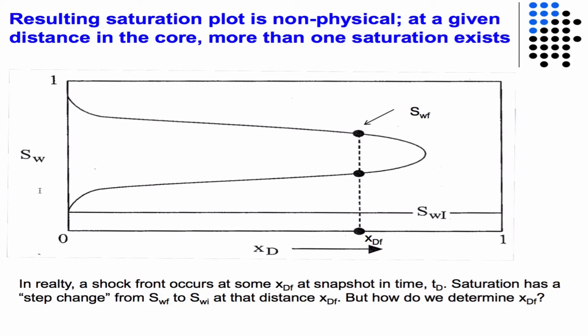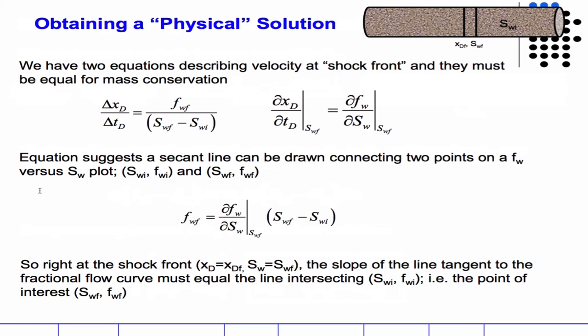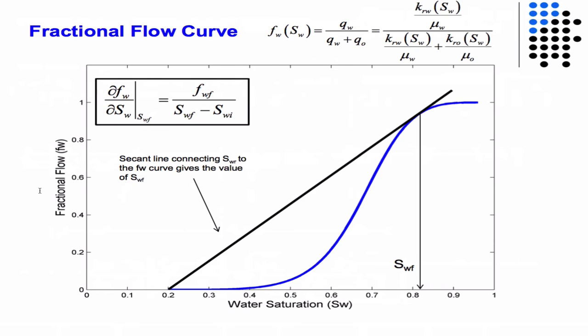What we're looking for now is xdf, which is the x position, the dimensionless distance x position of the constant saturation front, or the shock front. We write a mass balance across the shock front, and we essentially get this equation. After some algebra, we have this equation. We have two equations that must be equal to one another. Comparing the left-hand sides of these two equations, we can come up with this equation, which suggests a secant line can be drawn to determine the saturation of the front. From the initial saturation to the tangent point and to the inflection point of the fractional flow curve, that is the saturation of the front.